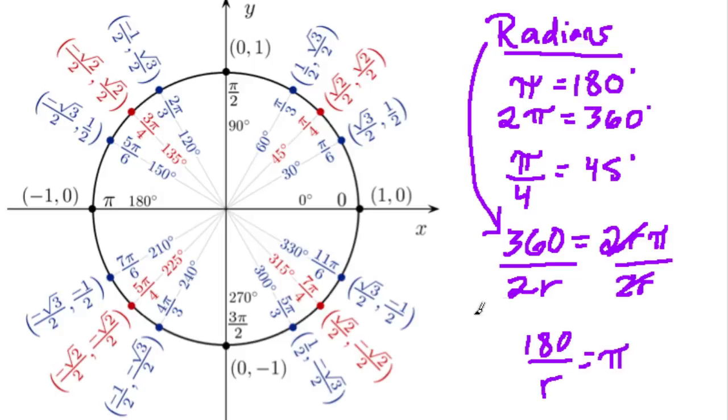But remember, this is a unit circle, so the radius is always just 1. The radius of a unit circle is just 1 unit long. So pi is equal to 180 over r, or just 180 over 1, which is 180.